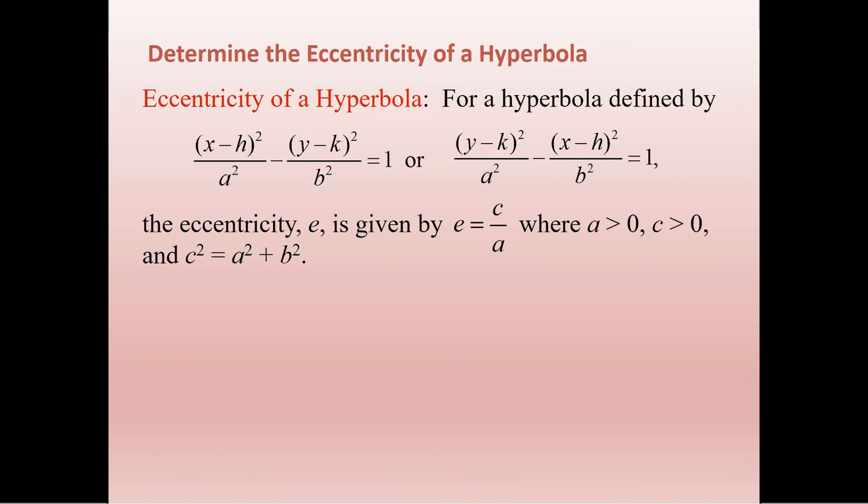The eccentricity, just like with the ellipse, is still going to be given by c over a. The only difference here is that c is now defined using c squared equals a squared plus b squared.